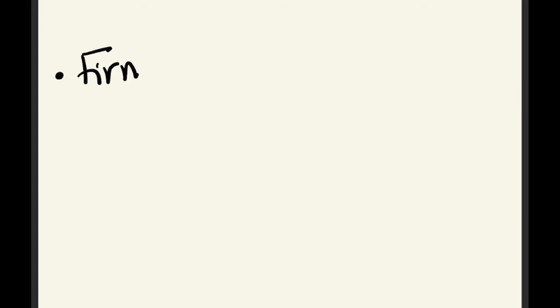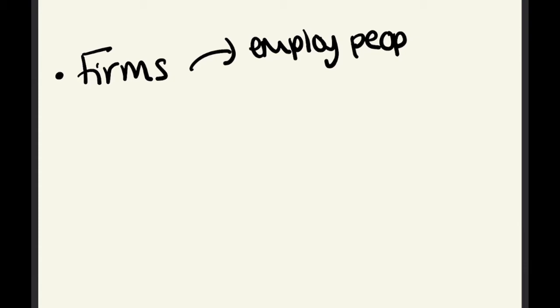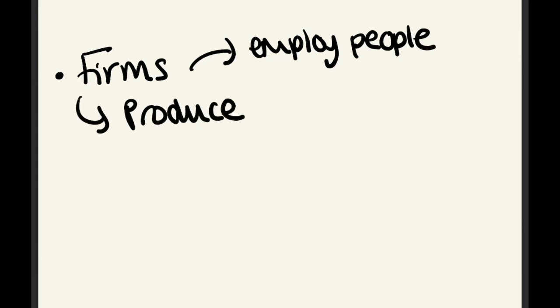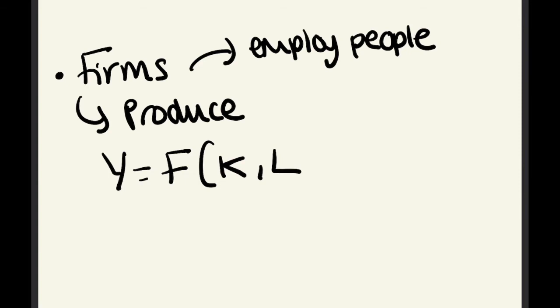The next agent in the economy is firms. They also have two behaviours in the Solow model. First, they employ people — we assume basically everybody gets employed. Second, they produce. In the Solow model, because it's simplified, we say only one good is produced, and this good is perishable in the sense that you have to either consume it or invest it, otherwise it is gone. The production function is y equals f(k, l), meaning we only have two inputs — capital and labour.